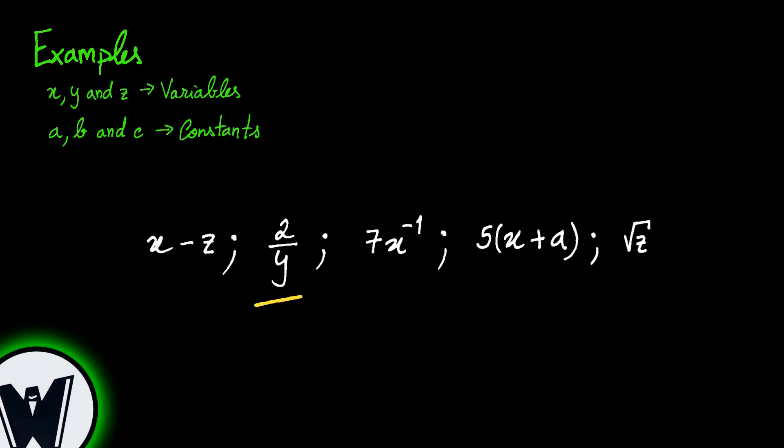The second one shows the variable in the denominator which is the same thing as having 2 multiplied by y to the power of minus 1. This according to one of the power properties that we know. And minus 1 is not a natural number so this also isn't a monomial.